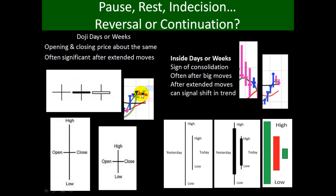On a Marketsmith chart, they tend to look like little stumps. An inside day is just the opposite of the outside day — yesterday's range is larger than today's range. It's usually a sign of consolidation. Often after a big move, you'll see an inside day or an extended move, and it can also signal a shift in a trend. Here's what it would look like if you used candles — notice the range from yesterday and how today's range fits neatly inside. Here would be a series of two inside days. On a Marketsmith chart, you have three down days and then an inside day. If it were an uptrend, here's four up days and then an inside day and then another inside day.